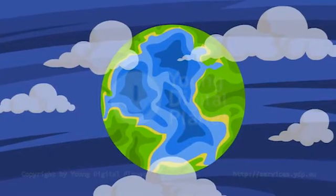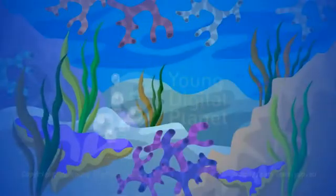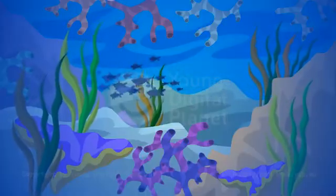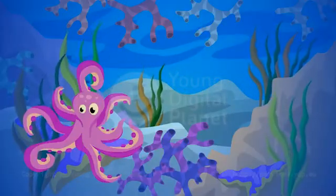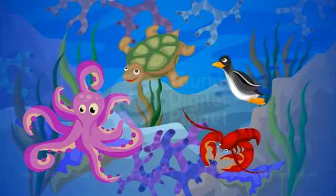Ocean is also a kind of an ecosystem. It is a huge area full of salt water. Organisms that live in the oceans are adapted to survive in the salt water. The oceans are inhabited by octopuses, lobsters, penguins, turtles and many other animals.